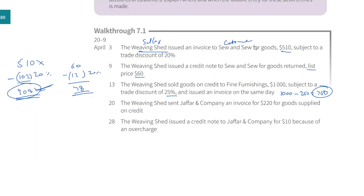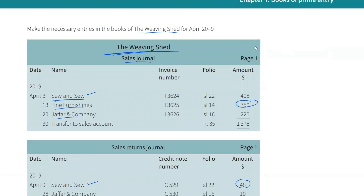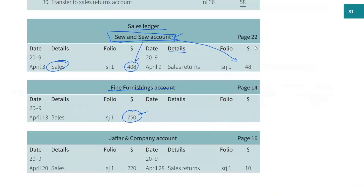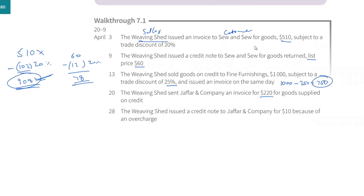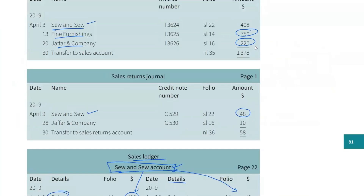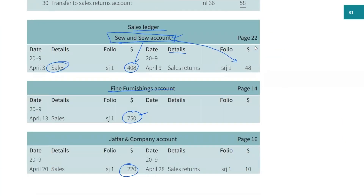The Weaving Shed sent Jafar and Company an invoice for $220 for goods supplied on credit. We send them an invoice, meaning we made a sale. Jafar and Company is listed in the sales journal; under the Jafar and Company account, $220 is debited. Later, Jafar and Company received a credit note for an overcharge of $10 — a reduction in the invoice treated as a sales return. So under the sales returns journal, Jafar and Company is listed and their account is credited, because receivables are going down.